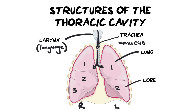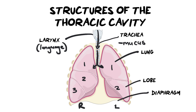The left lung is a little smaller because the heart occupies space on that side. Another structure visible in the diagram is the diaphragm, which is closely related to the breathing mechanism — it is the muscle that moves up and down to allow you to breathe.